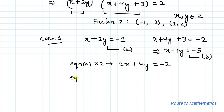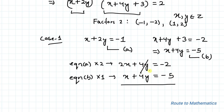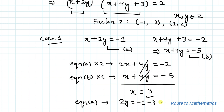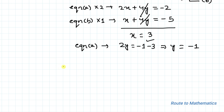Equation b multiplied by 1 gives x + 4y = −5. Subtracting, the 4y terms cancel, leaving 2x − x = x = −2 − (−5) = 3. Substituting x = 3 into equation a: 2y = −1 − 3, so y = −1. This gives the solution (x, y) = (3, −1).